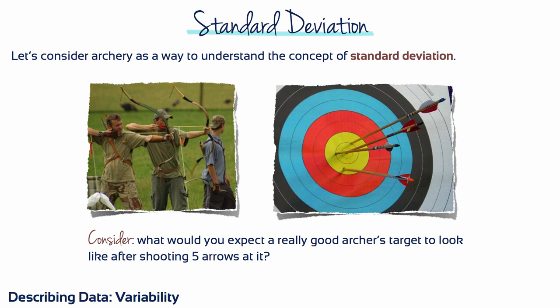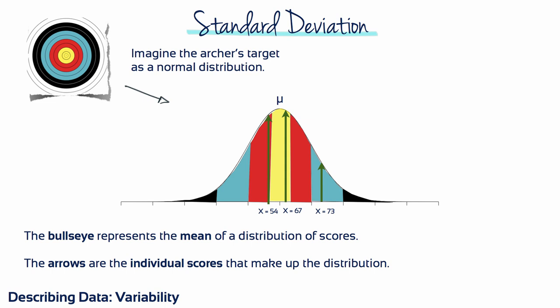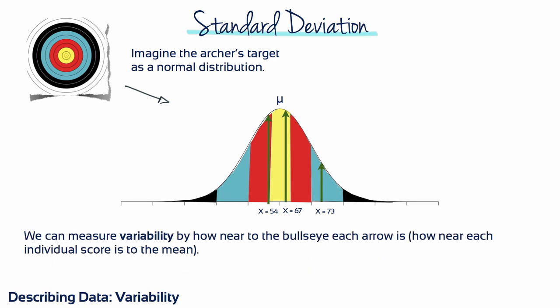The standard deviation is the most commonly used and most important measure of variability. Let's consider archery as a way to understand the concept of standard deviation. What would you expect a really good archer's target to look like after shooting five arrows at it? With a good archer's results, the arrows are clustered closely together and they're near the bullseye. While for a bad archer, the arrows are all over the place and they're far from the bullseye. Imagine the archer's target is a normal distribution — the bullseye represents the mean, while the arrows are the individual scores. We can measure variability by how near to the bullseye each arrow is — in other words, how near each individual score is to the mean.